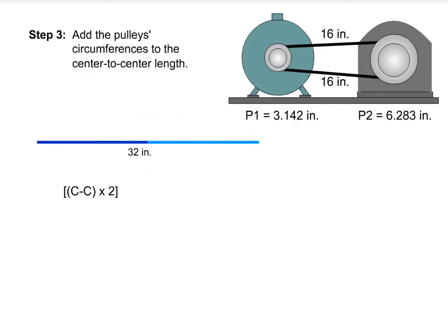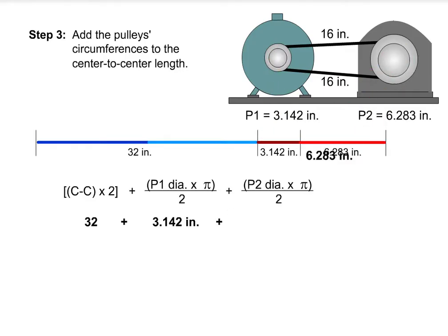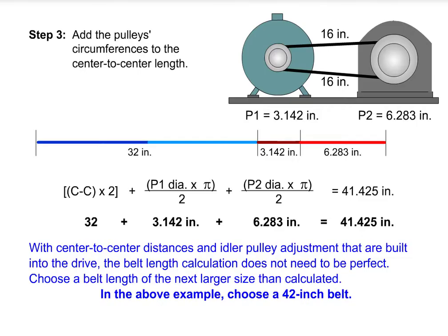Add the pulley's half circumferences to the center-to-center length. With center-to-center distances and idler pulley adjustment that are built into the drive, the belt length calculation does not need to be perfect.